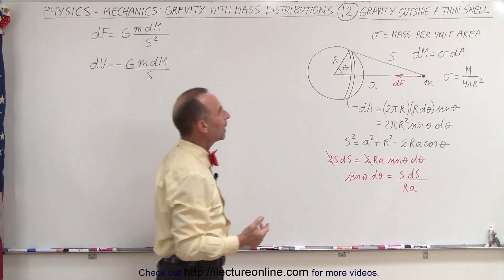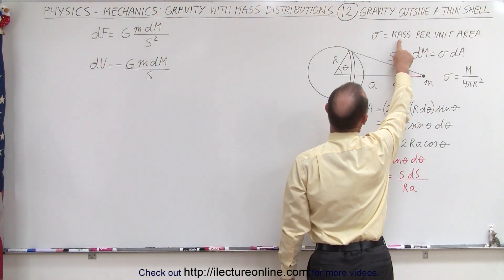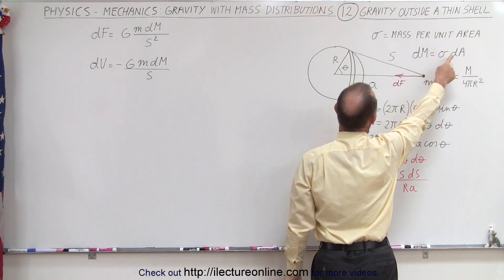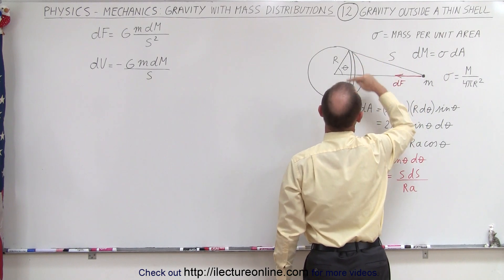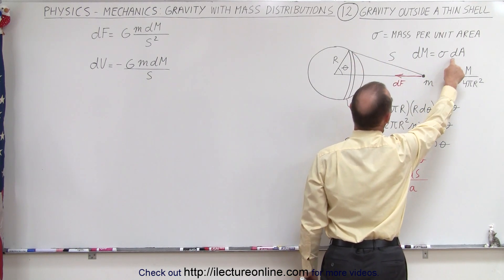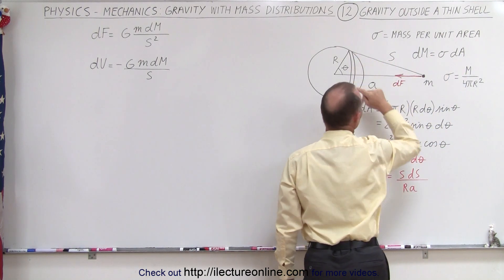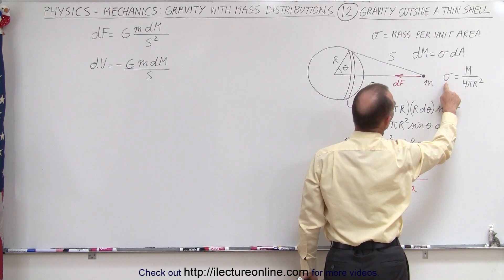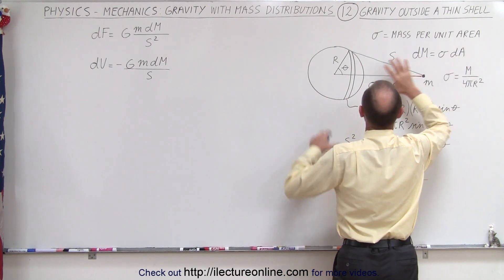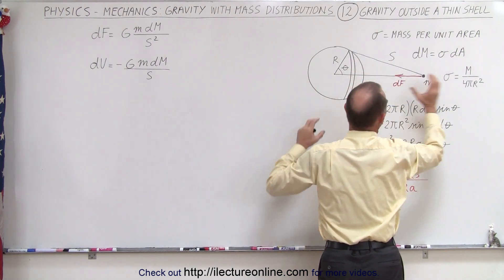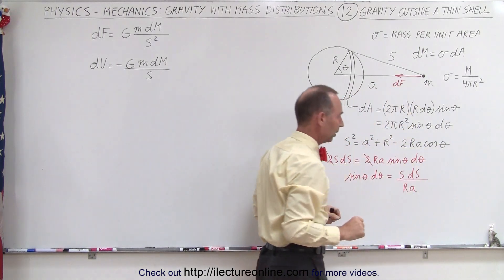We also need to think about the mass. Let σ represent the mass per unit area, so the small mass of a strip is σ dA. Sigma is defined as the total mass of the shell M divided by the total surface area 4πr².